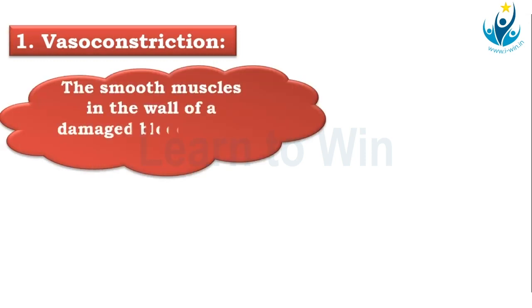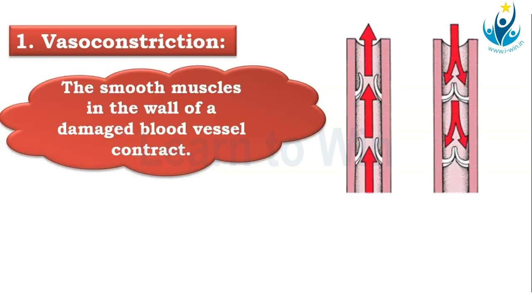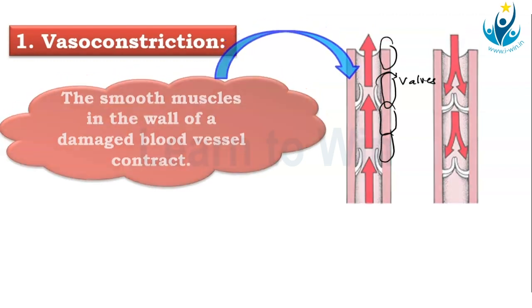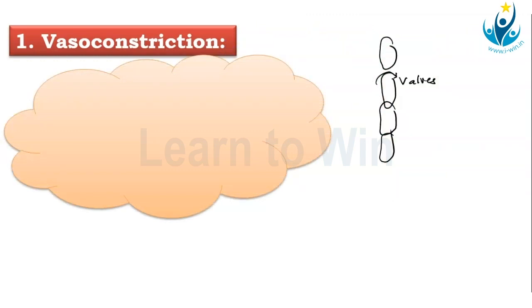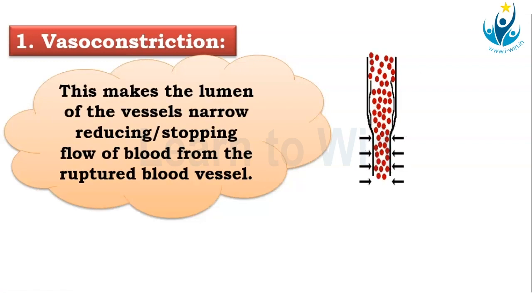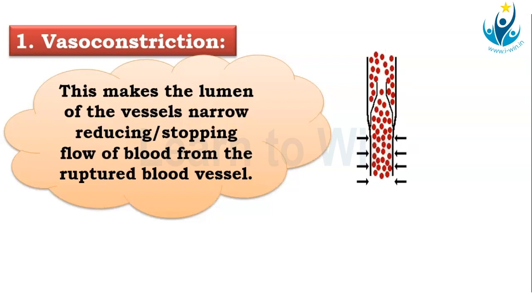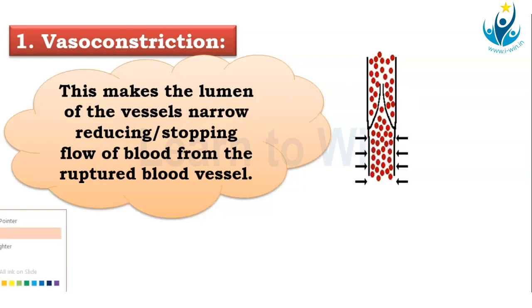The first step is vasoconstriction. In vasoconstriction, the smooth muscles of the damaged blood vessel contract. Normally these are the blood vessels with valves that allow unidirectional flow — blood can flow only in one direction. What happens is the smooth muscles start to constrict, making the vessel narrower, so that blood movement will be lesser. This is clearly seen in the animation.